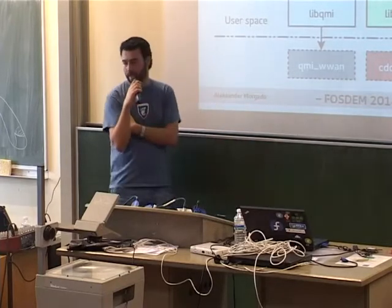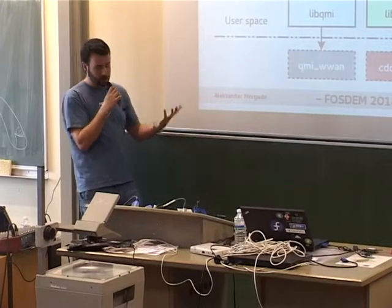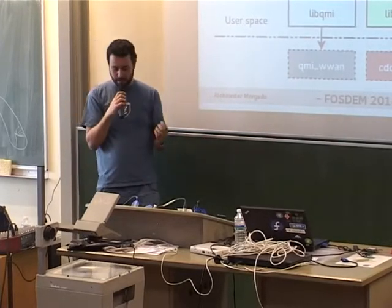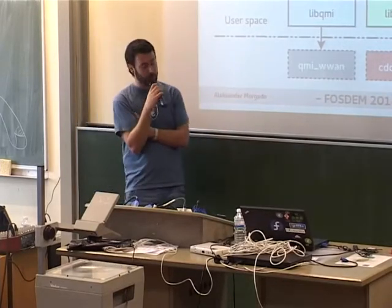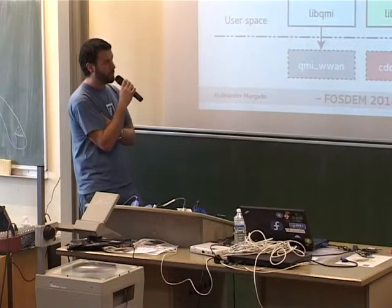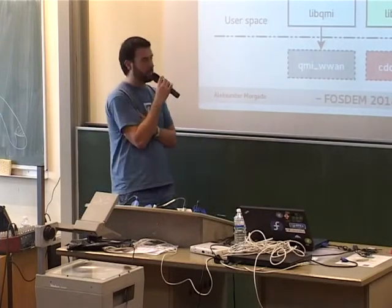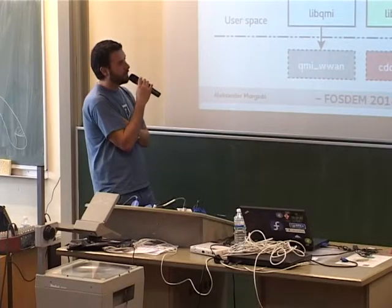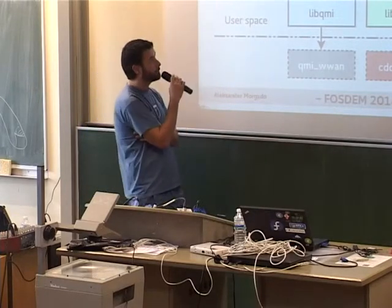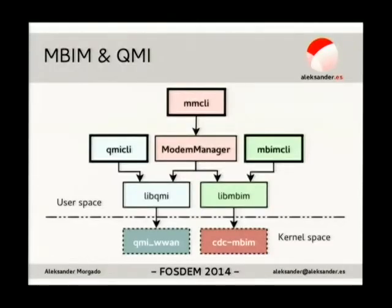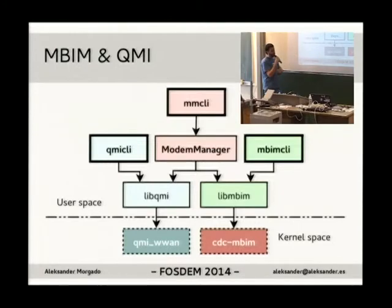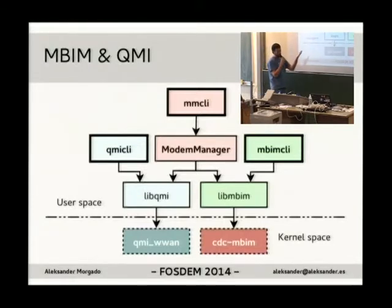We do the same for libMBIM. Even if the building of the message is different because how the message is structured is completely different to QMI — I would say it's better the way they do it in MBIM. We also have a JSON database, we encode the messages in JSON format and generate the code for the library. QMI CLI is the one for libQMI, MBIM CLI is the one for libMBIM.